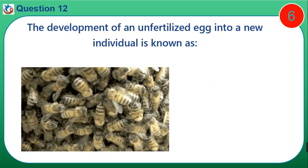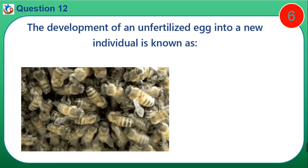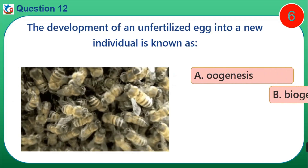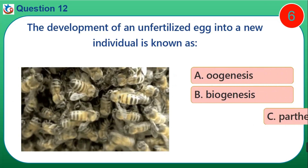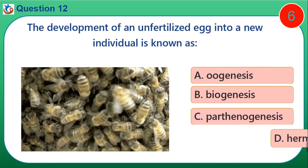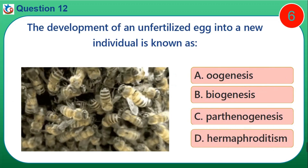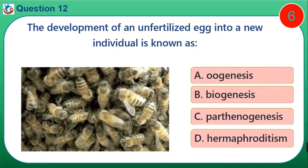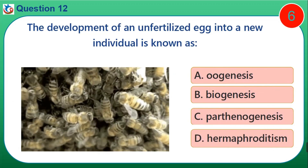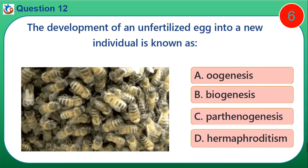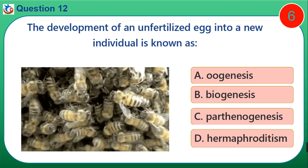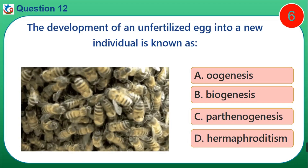Question 12. The development of an unfertilized egg into a new individual is known as: A. Oogenesis. B. Biogenesis. C. Parthenogenesis. D. Hermaphroditism.